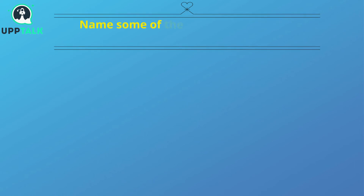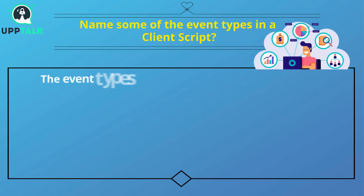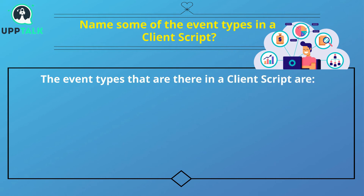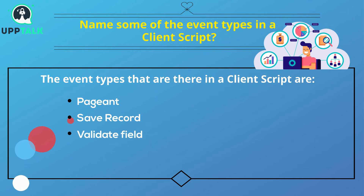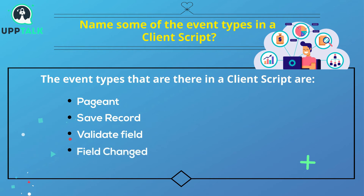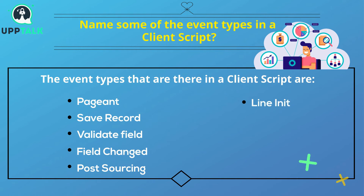Name some of the event types in a client script. The event types in a client script are: pageInit, saveRecord, validateField, fieldChanged, postSourcing, lineInit, validateLine, and recalculate.